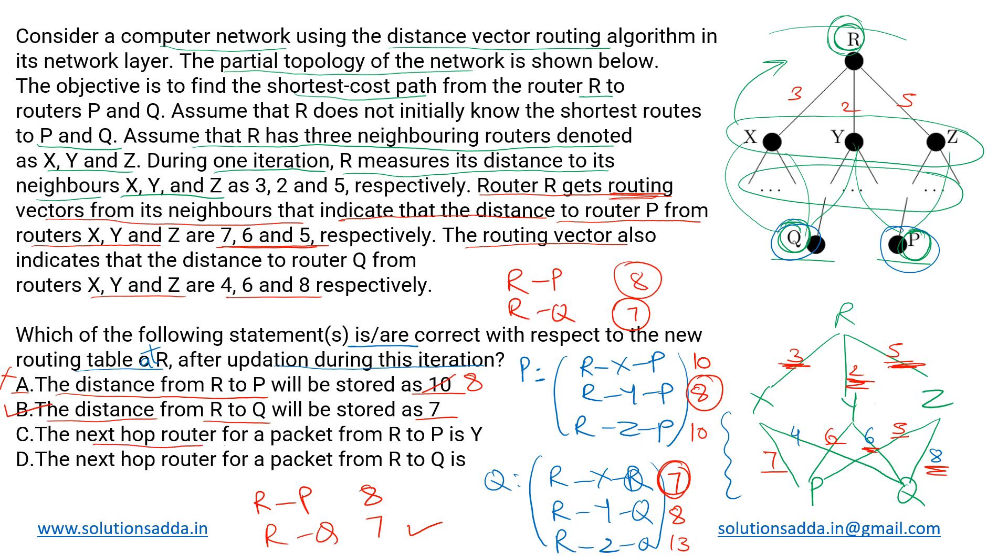And then the next hop router for a packet from R to P is Y. So for R to P we got this particular path, that is R-Y-P, which means if we want to reach from R to P then the next hop would be Y. That is the path which has been chosen, so this is also true.